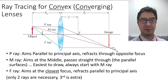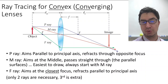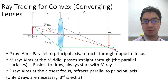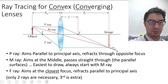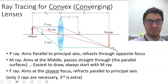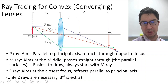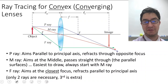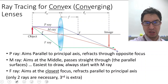We're going to start with the first kind of lens, which is a convex or converging lens, beginning with ray tracing just like we saw with mirrors. We want to be aware of three rays — you only need two to find the image but it's important to draw all three. The P ray aims parallel to the principal axis, that horizontal line passing through the middle of the lens.